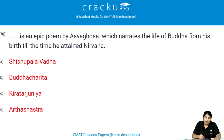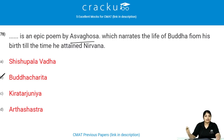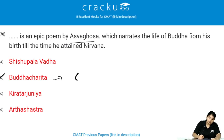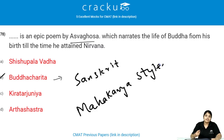Buddhacharita is an epic poem by Ashvaghosha which narrates the life of Buddha from his birth till the time he attained Nirvana. It is written in Sanskrit in the Mahakavya style and composed in the second century Common Era.